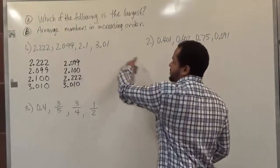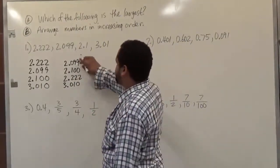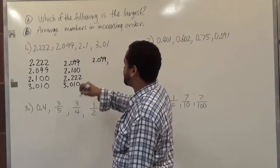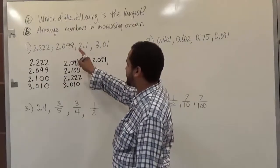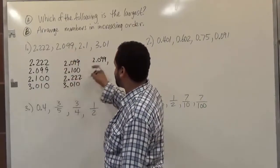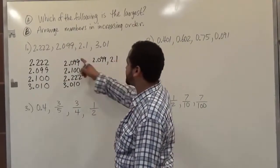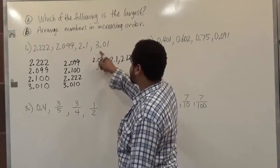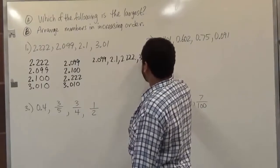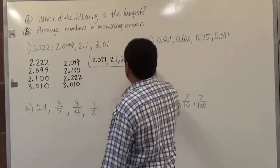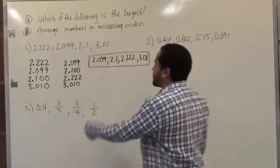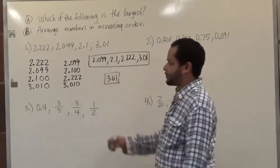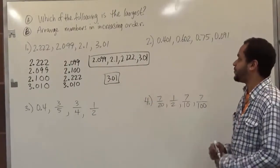So now to arrange these numbers in order, we know that 2.099 is the first, the second term is 2.1, the third is 2.222, and the fourth is 3.01. This arranges the numbers in order, and from this order we can see that the largest number here is 3.01. So there we have our largest, and here we have our order.